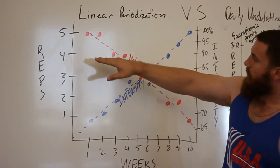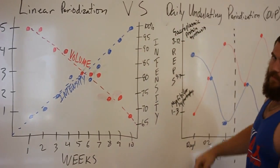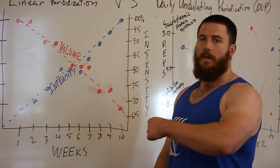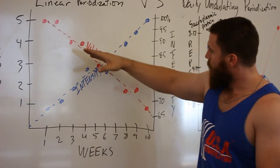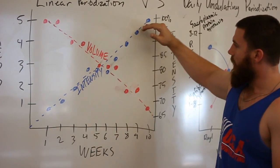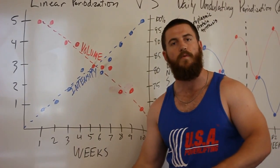Linear periodization, if you start with a five by five, is completely missing the sarcoplasmic protein synthesis. You're not getting the hypertrophy that you would get from daily undulating periodization because your sole focus is on strength. And as you go through the weeks, you lower the reps, you increase the intensity. But again, where's the eight by twelve?